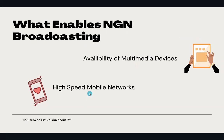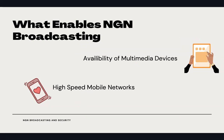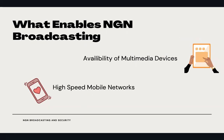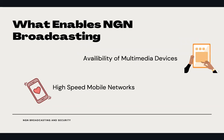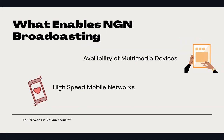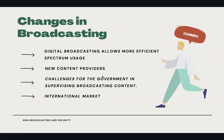The last aspect that enables NGN broadcasting is mobile networks, or high-speed mobile networks. High-speed broadband must also be achieved for mobile networks. Nowadays, mobile networks like 4G and 5G are even comparable to fiber optics or FTTH in terms of network speed. There are also some changes in the way broadcasting works.